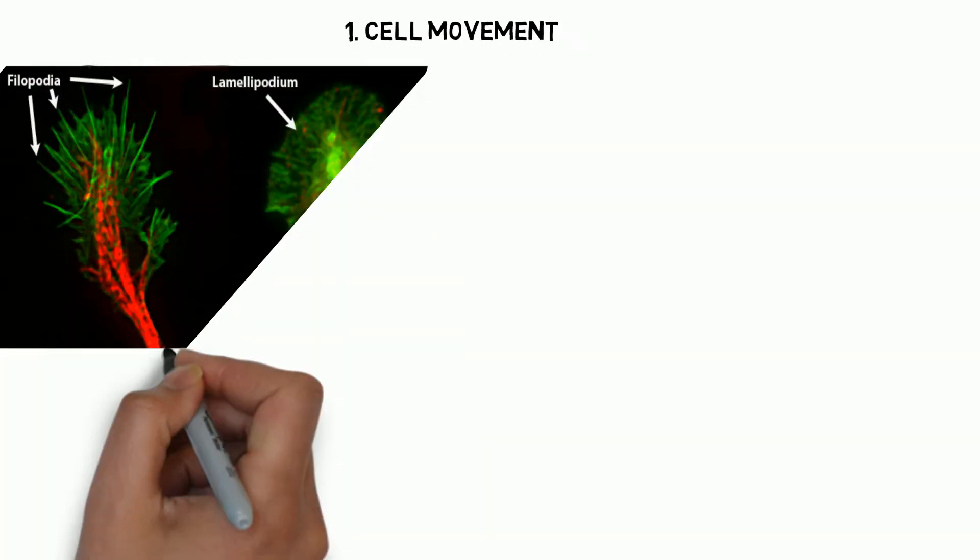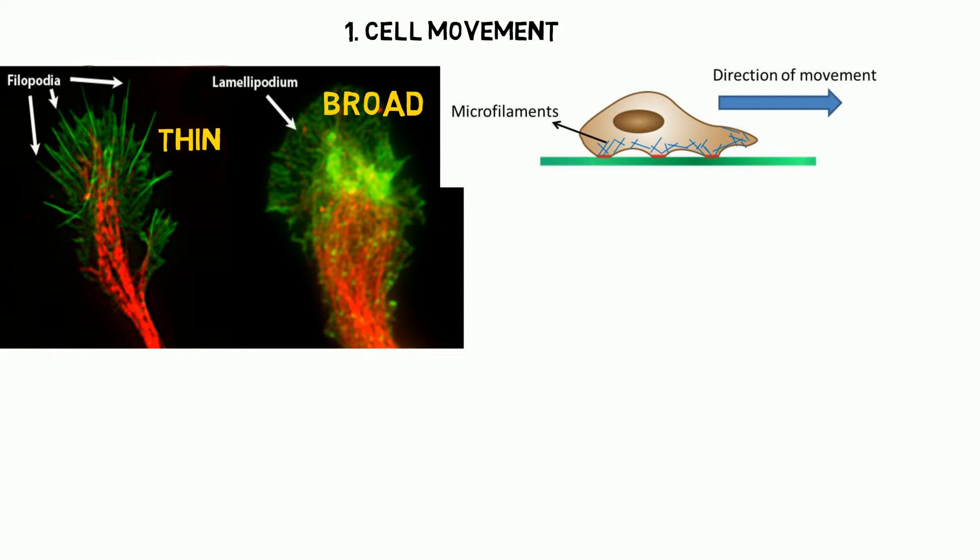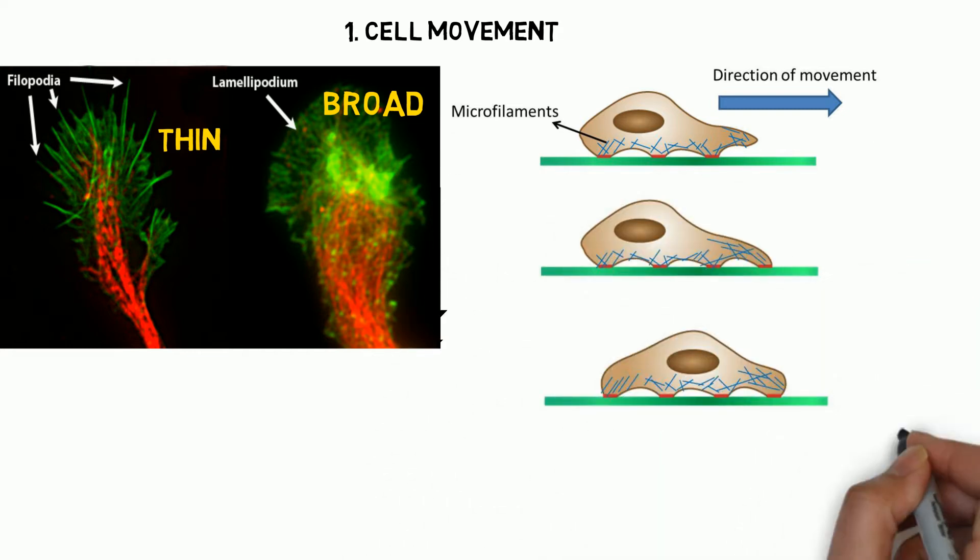Microfilaments are important for cell movement. They are found in filopodia and lamellipodia, which are respectively the thin and broad protruding structures from the cell membrane. Microfilaments rapidly polymerize and depolymerize, hence allowing the cell to move.